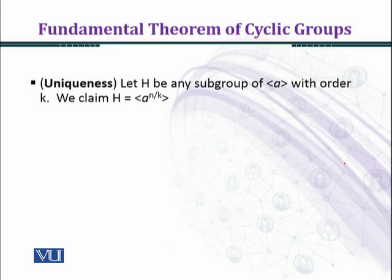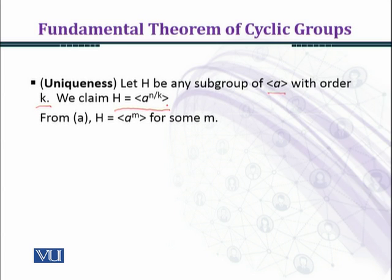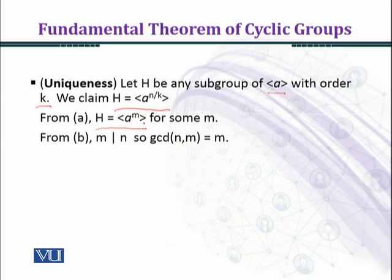Now we establish uniqueness of such a subgroup. Let h be any subgroup of the group generated by a with order k. We claim h is generated by a raised to the power m. From Part A of the Fundamental Theorem of Cyclic Groups, we have h is generated by a raised to the power m for some integer m. From this, m divides n, so gcd(n, m) equals m.